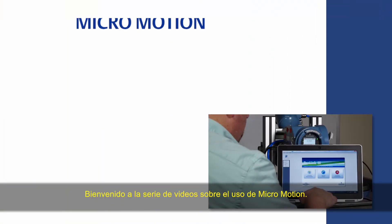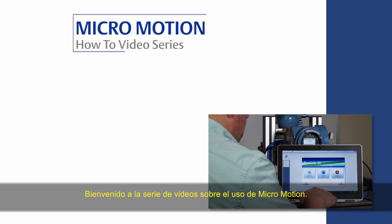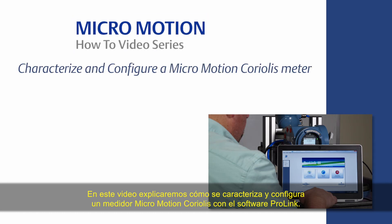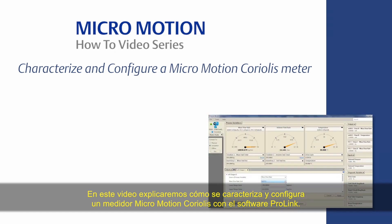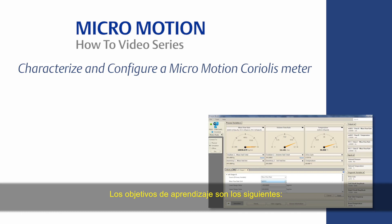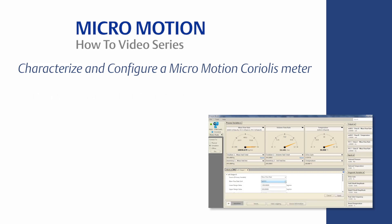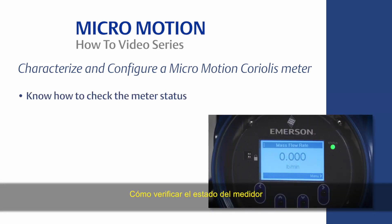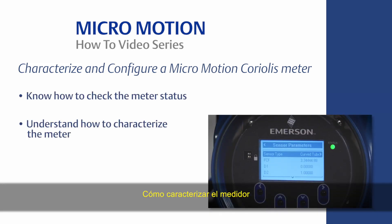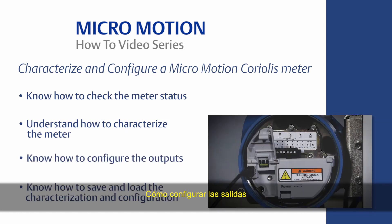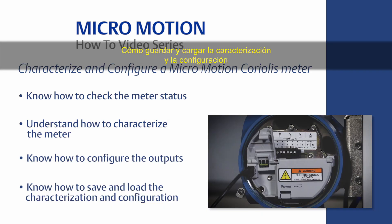Welcome to the MicroMotion How-To video series. In this video, we will cover how to characterize and configure a MicroMotion Coriolis meter using ProLink software. The learning objectives are the following: know how to check the meter status, understand how to characterize the meter, know how to configure the outputs, and know how to save and load the characterization and configuration.